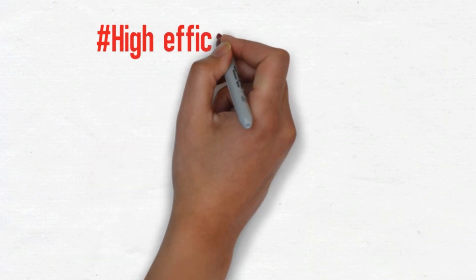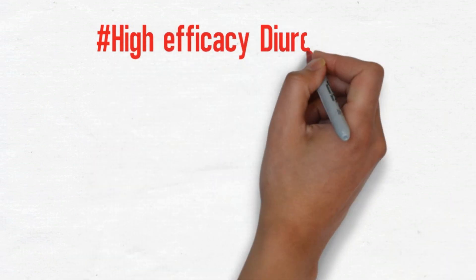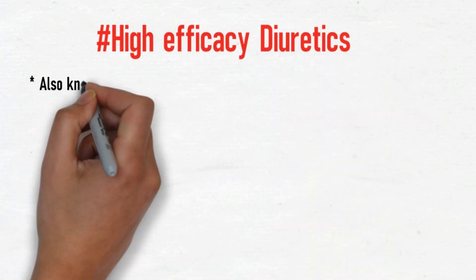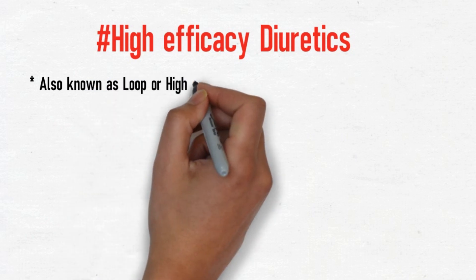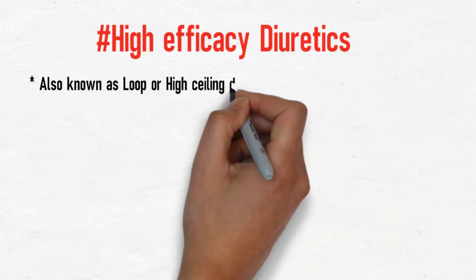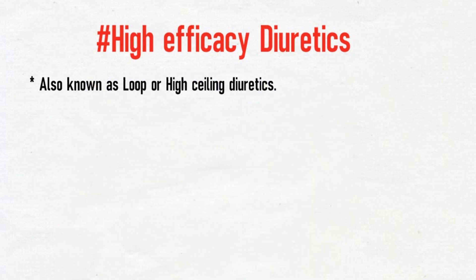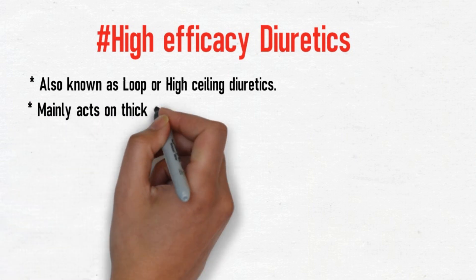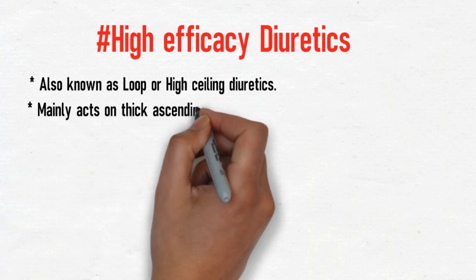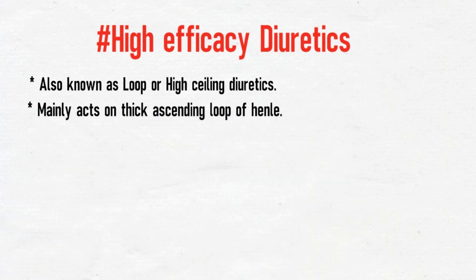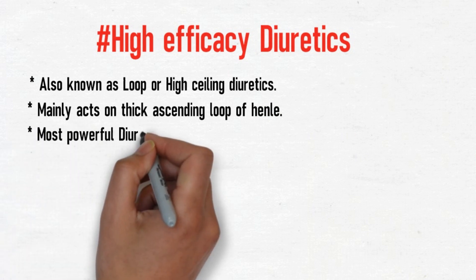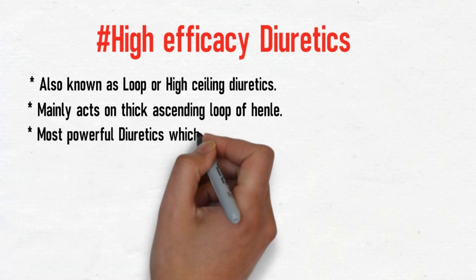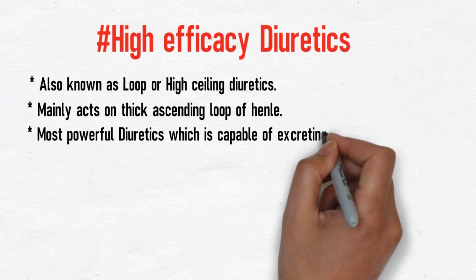Let's discuss high efficacy diuretics. Also known as high ceiling or loop diuretics, they mainly act on the thick ascending loop of Henle. These are the most powerful diuretics, capable of excreting nearly 20 to 30 percent of the sodium in the urinary filtrate.